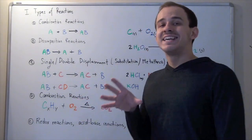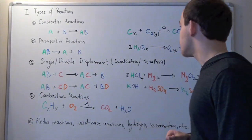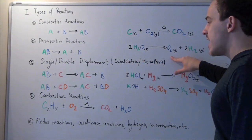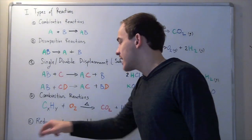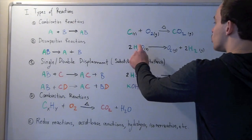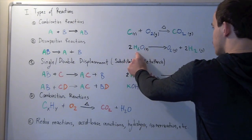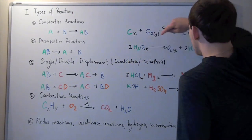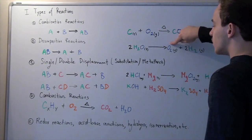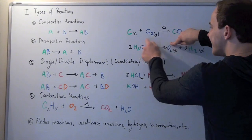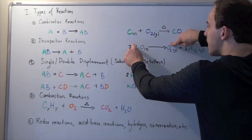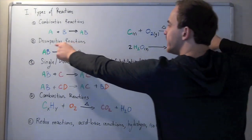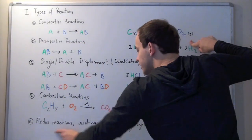Note that a certain reaction can be labeled as more than one type. For example, the water decomposition reaction is also an oxidation-reduction reaction, because O gets oxidized — going from an oxidation state of negative 2 to zero — while H gets reduced, going from positive 1 to zero, gaining electrons. So this reaction is not only a decomposition reaction but also a redox reaction.